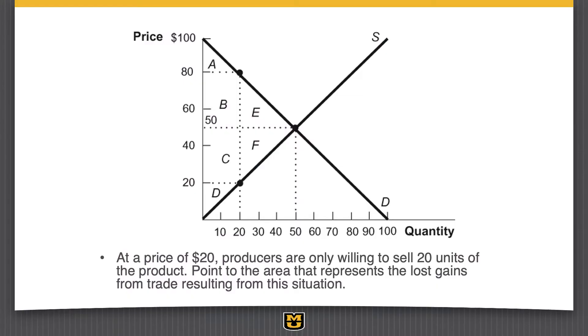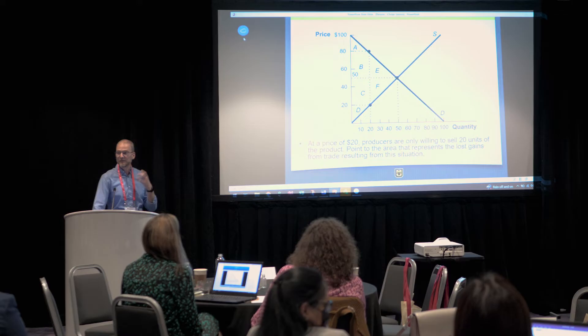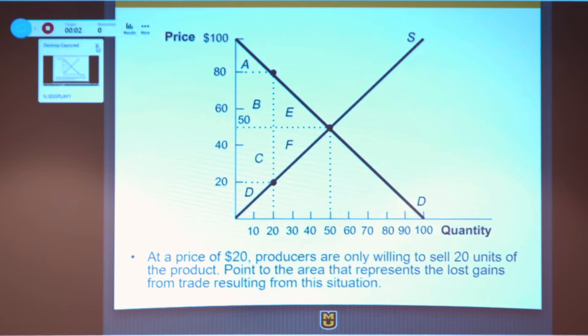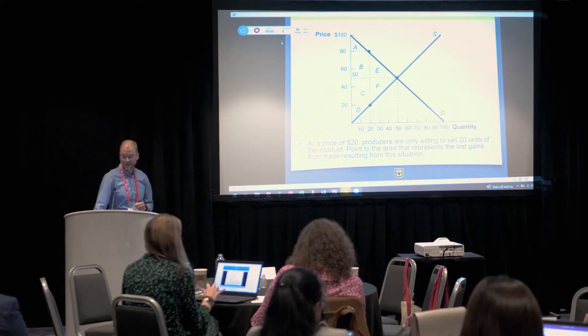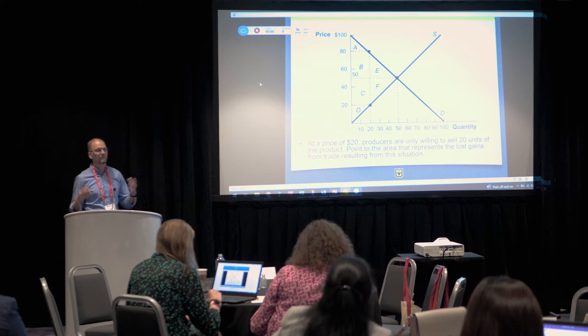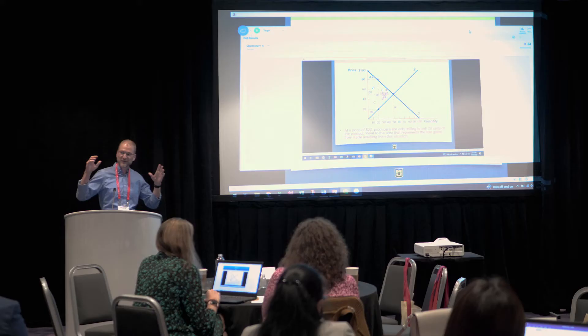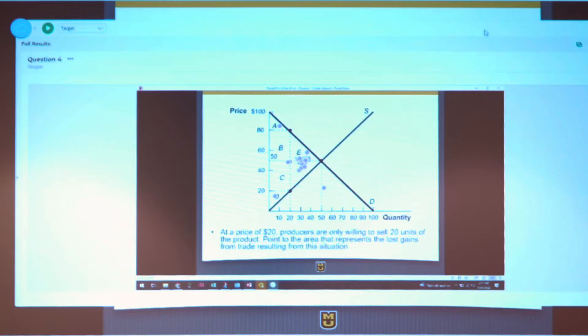Here we have supply and demand but we're not at equilibrium — we have a price of twenty dollars, so producers are only willing to sell twenty units. Let's find our deadweight loss. We could give letters or ask them to calculate it since there are numbers, but I think there's something useful about them looking at the graph and pointing to it. It's going to be another click-on-target question. Put the dot in the middle of the deadweight loss area and hit submit. Students really like these because you get this big purple dot — sometimes it looks more like a Rorschach blot than anything useful — but they're excited to see what the picture looks like. We can see where people thought it was versus where it actually is: our deadweight loss, because we're underproducing.